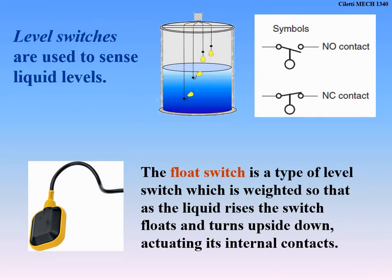Level switches float inside tanks and monitor fluid levels — your gas tank and toilet both use this concept. In your toilet, a ballast in the tank rises with the water level and shuts off the fill valve when it reaches the right level. In industry, we use level switches in large tanks and vats to monitor and control fluid levels. We're checking for the level of whatever is in the tank that we need.